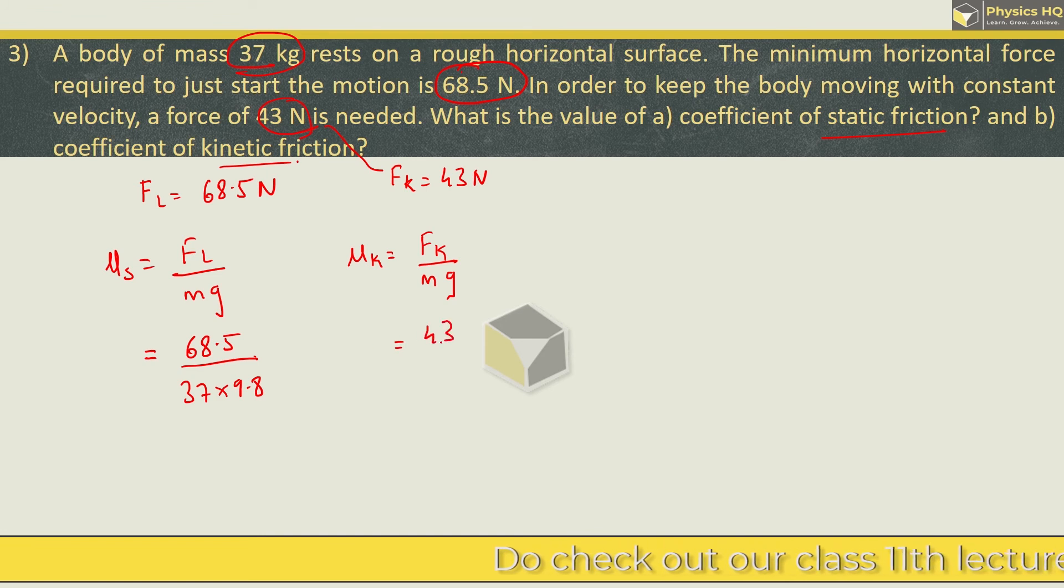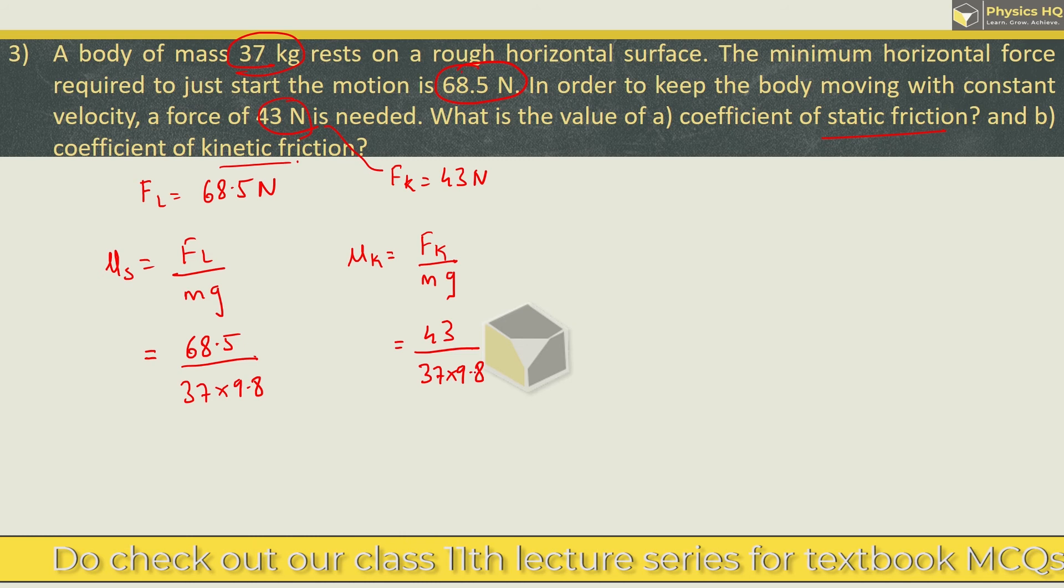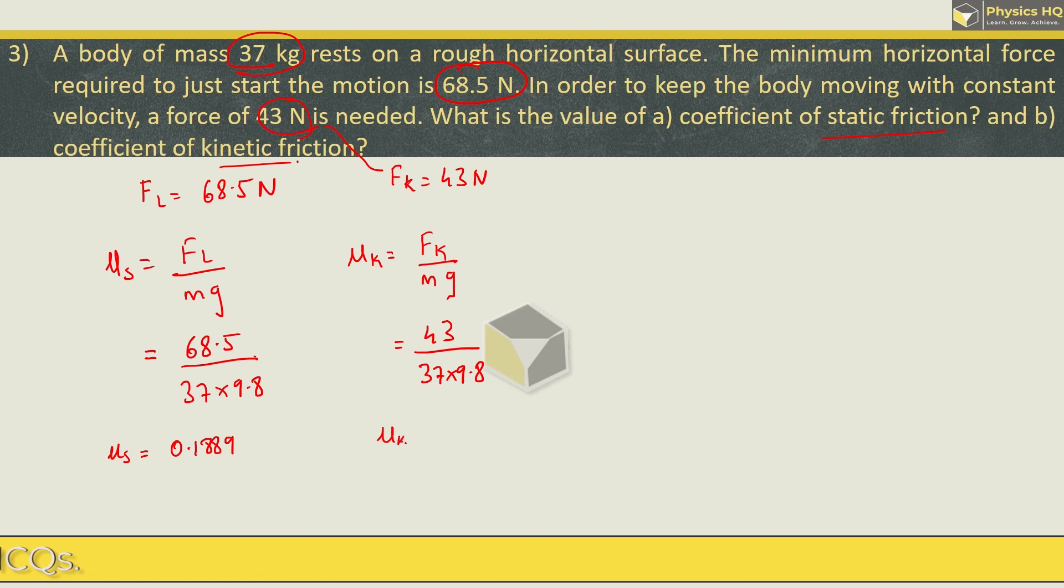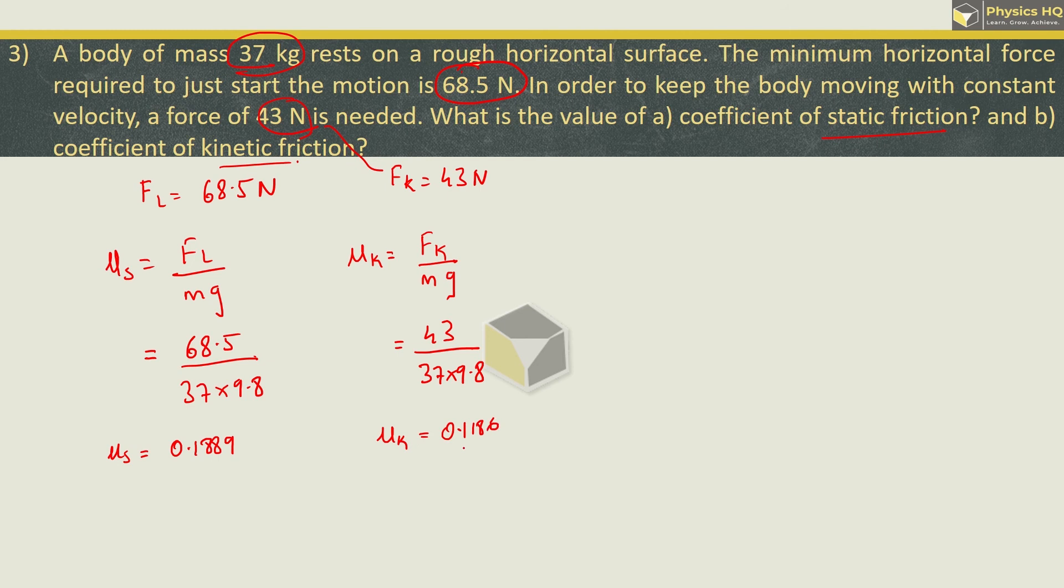Mass is given as 37. G value is 9.8. Similarly, here also force is given as 43, mass is 37, and G value is 9.8. Now when you solve this by using log, you will get coefficient of static friction as 0.1889 and coefficient of kinetic friction 0.1186.